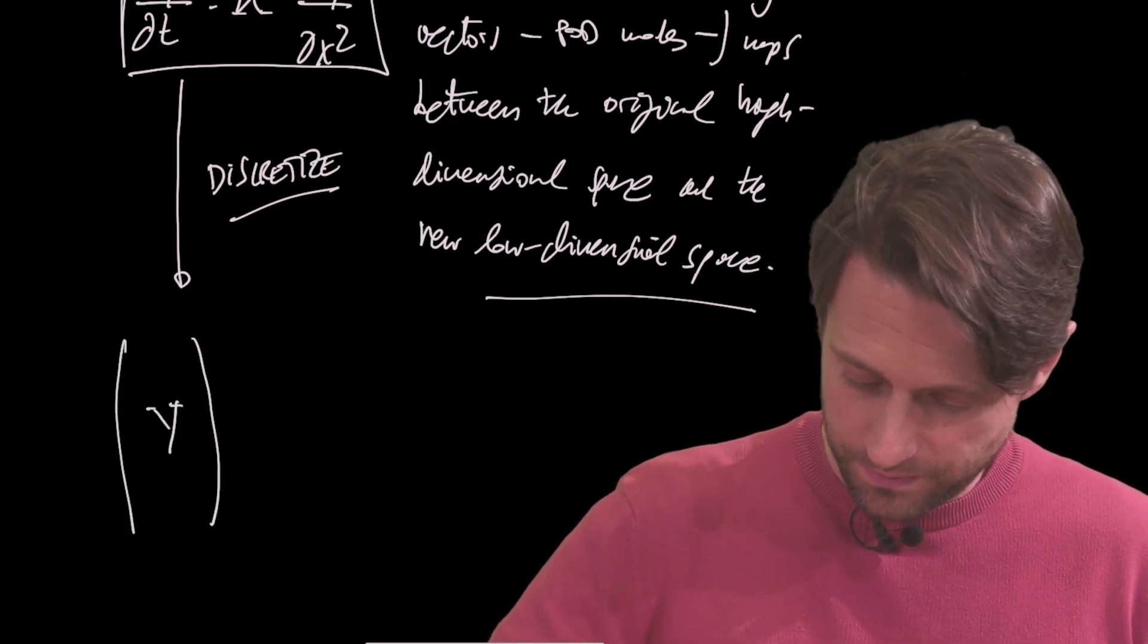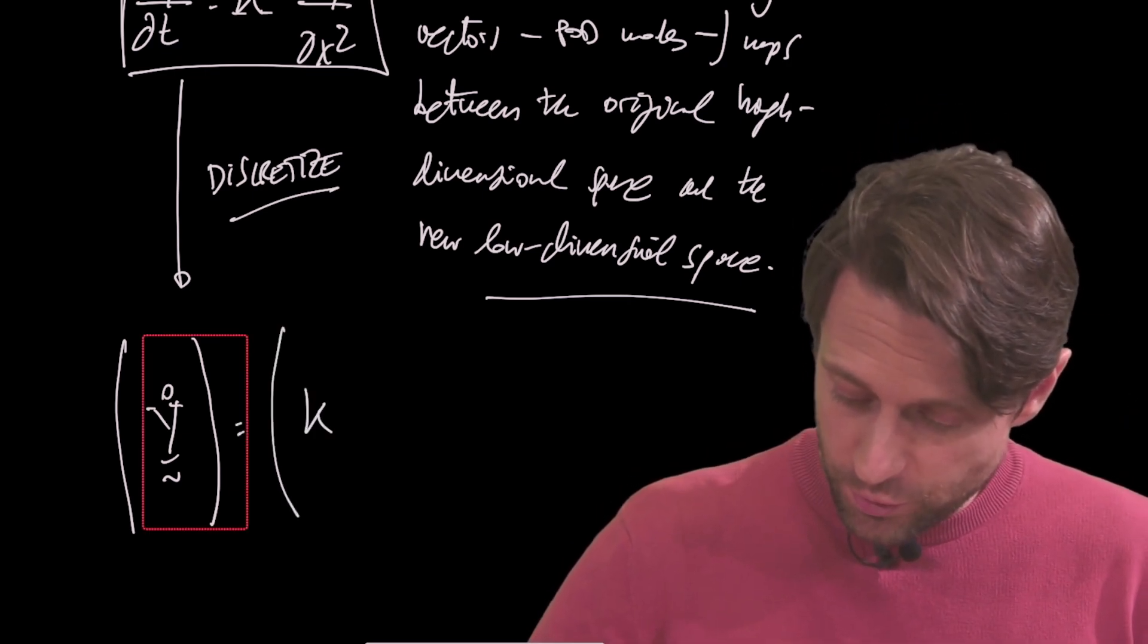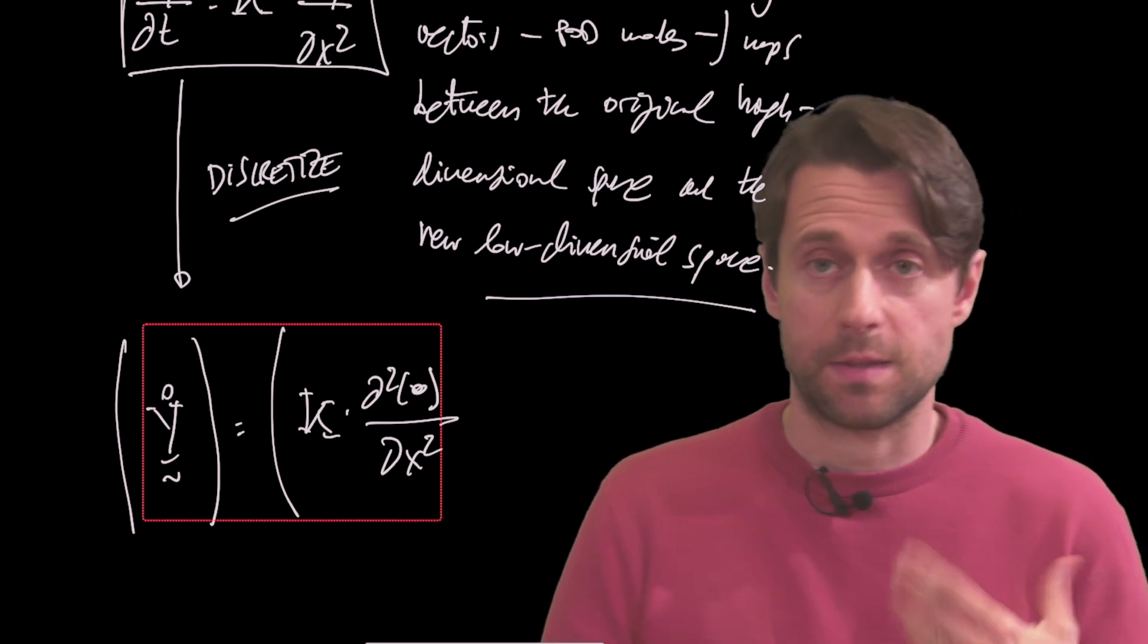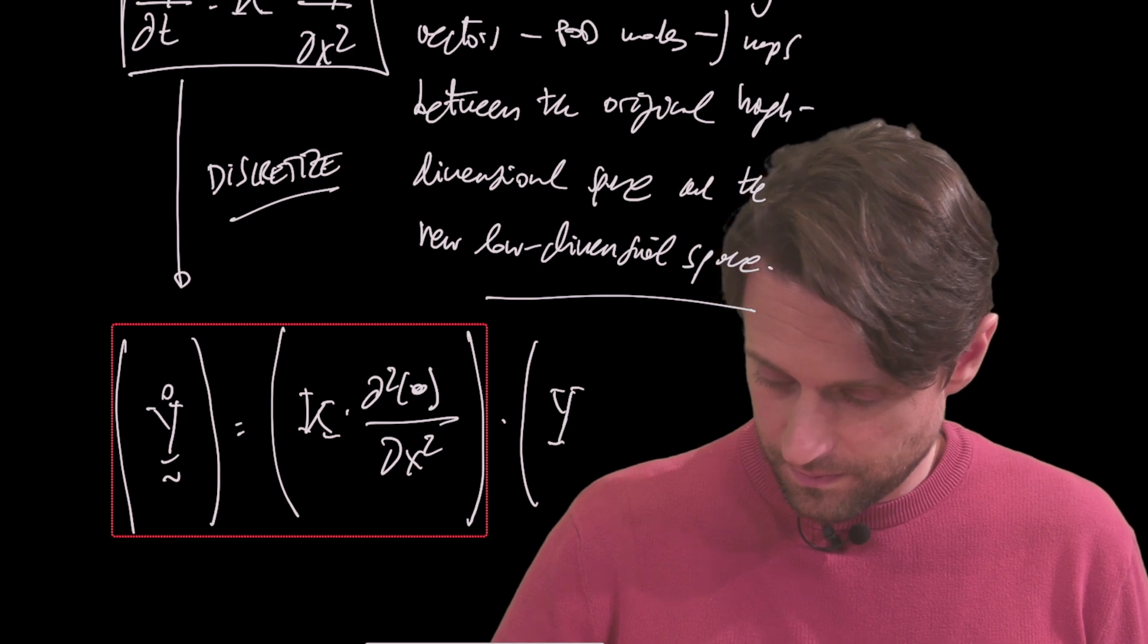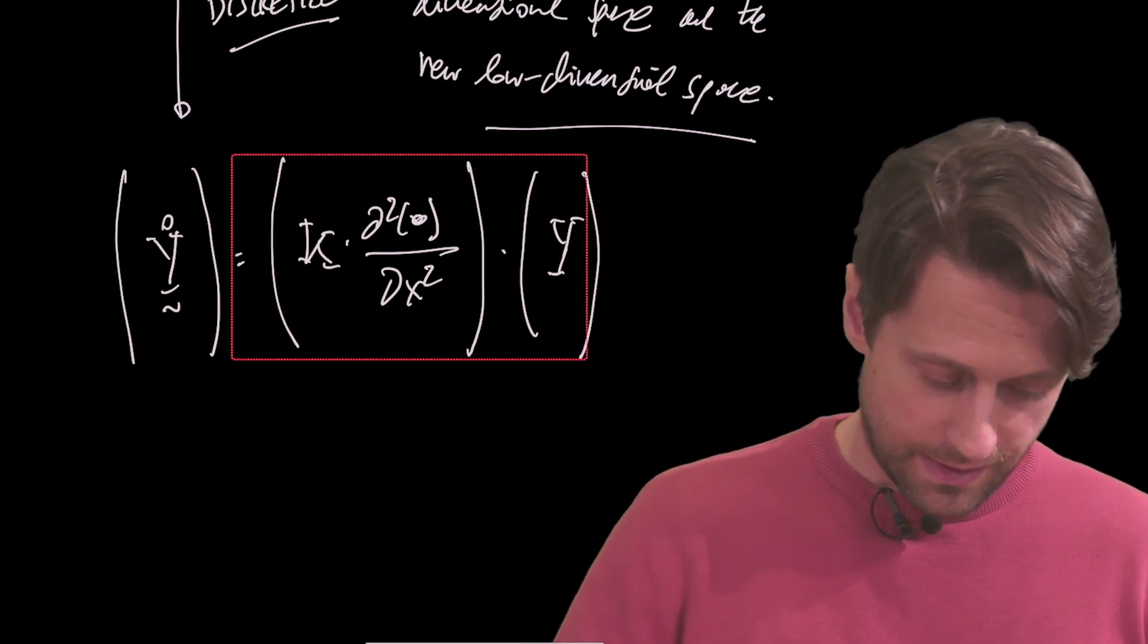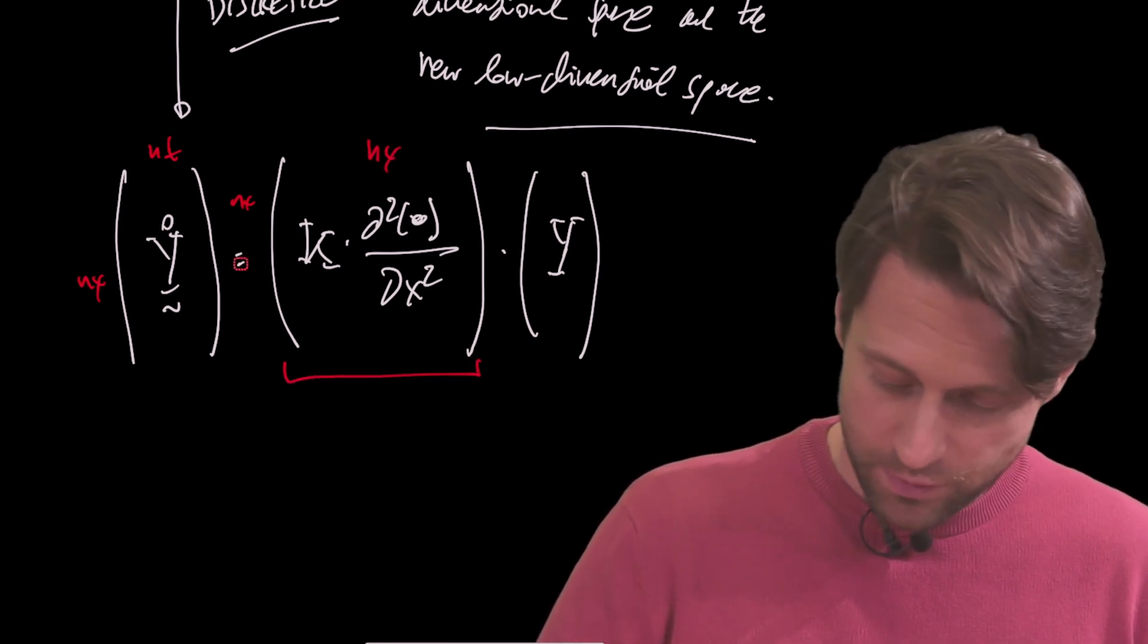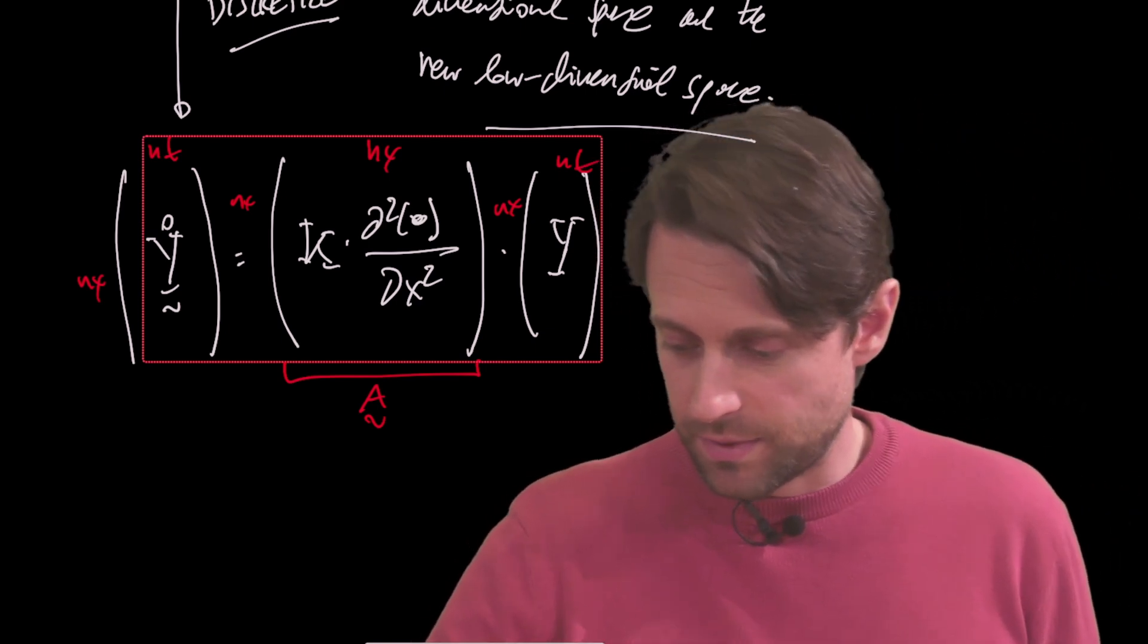So let's take this and discretize. Here I have Y_dot, this is equal to my linear operator A, which is going to be the conductivity k times ∂²/∂x². So this would be my spatial derivative operator, and this is now multiplied by Y. Now if we remember all the different things that we have here, this is of size n_x by n_t, this is of size n_x by n_x, where this is my matrix A. This is of size n_x by n_t. And now I can simply project.